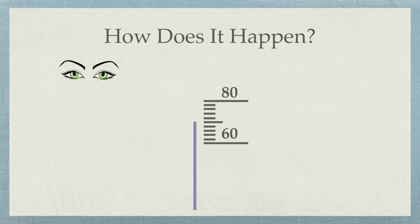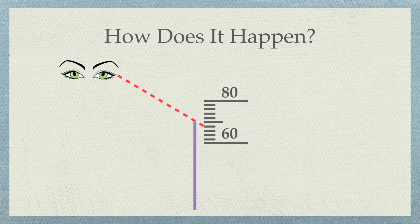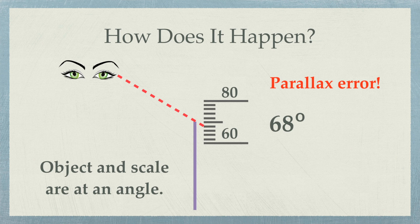But if you look from above, the line of vision looks like this. Hence, the object and the scale are at an angle. Hence, the end of the object appears to be aligned to 68 degrees. This is parallax error.